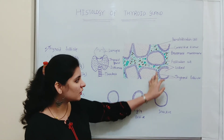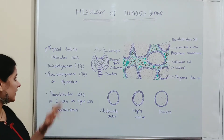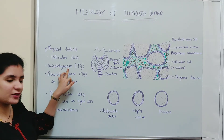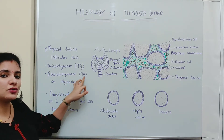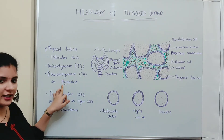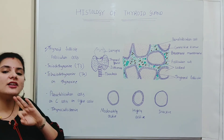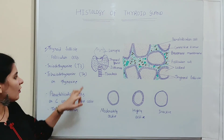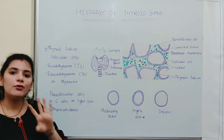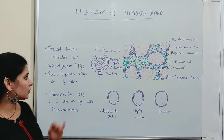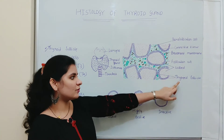The follicular cells which make up the thyroid follicle secrete two types of hormones: triiodothyronine, also known as T3, and tetraiodothyronine, also known as T4 or thyroxine. As the name indicates, triiodothyronine has three iodine atoms, whereas tetraiodothyronine has four iodine atoms. These are the hormones secreted by the follicular cells.